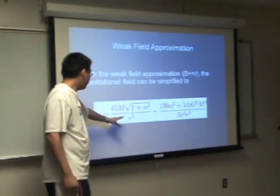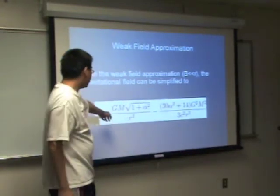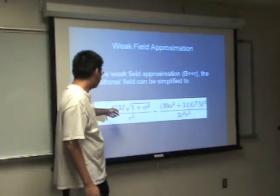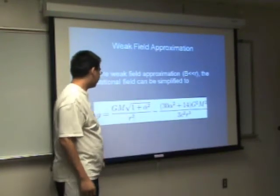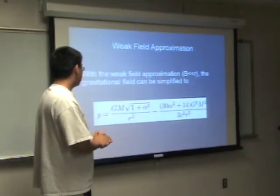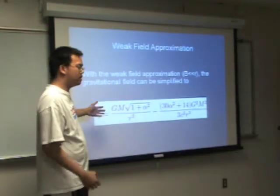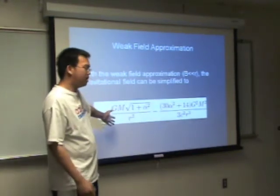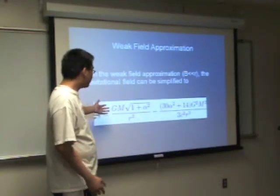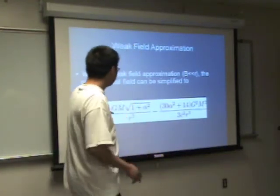For here, we can see that this part is the Newtonian gravitational field times this electric charge. If the charge mass ratio is, say, root 3, then the g is basically a little bit more than 2 times the Newtonian gravitation. So there's a huge difference from there.